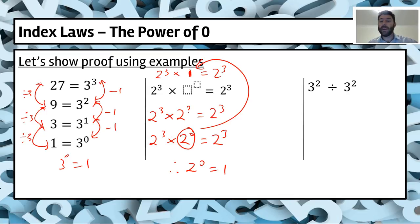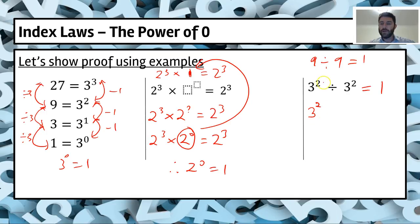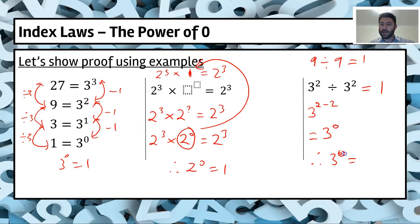For our last proof: any number divided by itself equals one — for example, nine divided by nine equals one. Using index law two, the division law, we keep the base and subtract the indices: three squared divided by three squared gives three to the power of two minus two, which is three to the power of zero. Since we divided the number by itself the answer is one, so three to the power of zero equals one. We've now proven using all three methods that any number to the power of zero equals one.